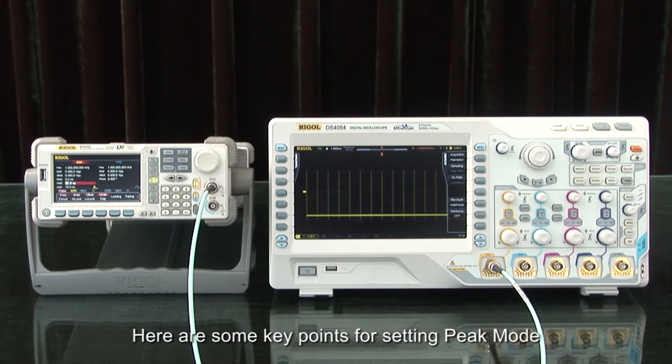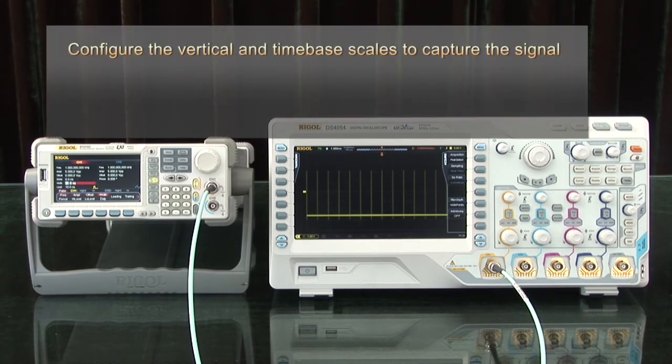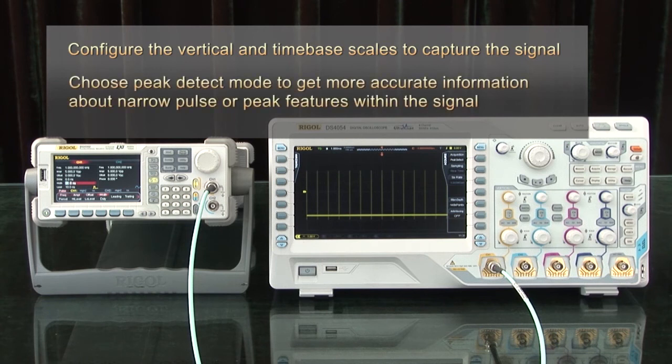Here are some key points for setting peak mode. Configure the vertical and time-based scales to capture the signal. Then choose peak detect mode to get more accurate information about narrow pulse or peak features within the signal.